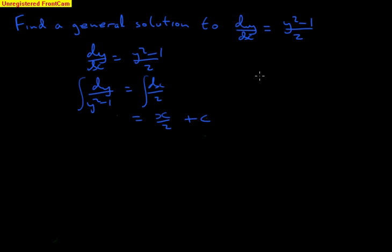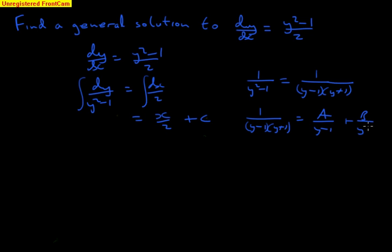I'll just do that on the right hand side over here. So I've got 1 over y squared minus 1. Now that's the same as 1 over y minus 1 into y plus 1. You just have to recognize that's the difference of two squares, which hopefully you do. And then we've got 1 over y minus 1 times y plus 1 equals a over y minus 1 plus b over y plus 1.